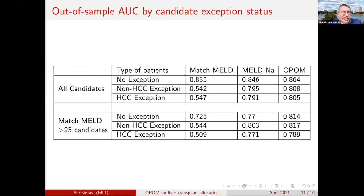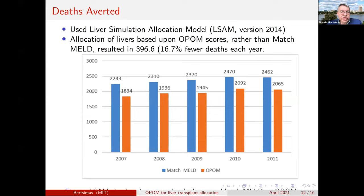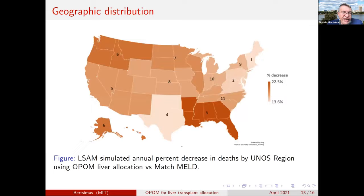Most importantly, we developed a simulation system. The nation uses a Liver Simulation Allocation Model, and when a policy is proposed the simulator is utilized. We observe that on average, compared to MELD historical simulations, we approximately save 400 lives — about 17 fewer deaths every year — and this holds consistently year over year. Looking at geographic distribution, the benefit ranges from 13 to 22 percent improvement in death rates, with an average of about 17 to 18 percent, across all states — it is not an isolated effect.